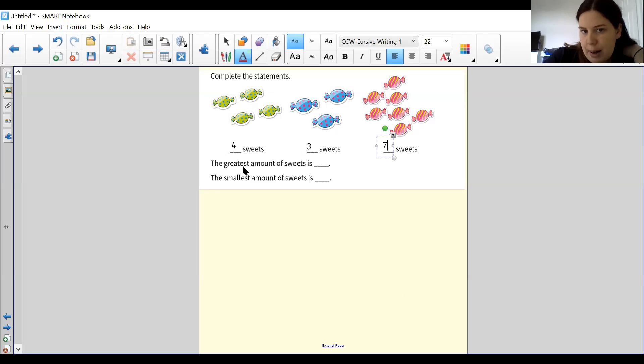The greatest amount of sweets is, so when we say greatest, the one that's the most. So the greatest is seven. And the smallest is the least, the smallest number. So is four or three smallest? Well done. It is three. And then I've solved my question.